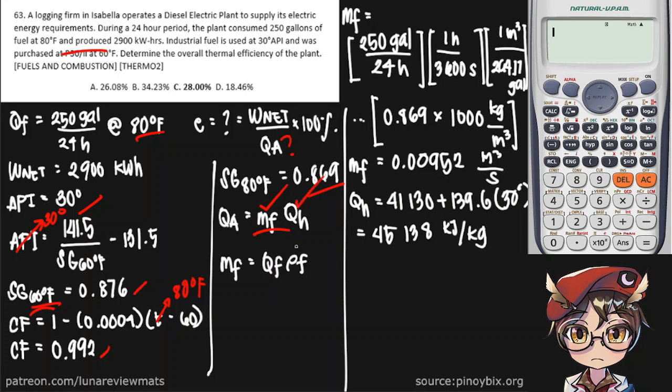Now we have our higher heating value. So, going back, our overall thermal efficiency is η is equal to - oh, we know our work net: 2,900 kilowatt hours per 24 hours. Don't forget this, so that these cancel out.